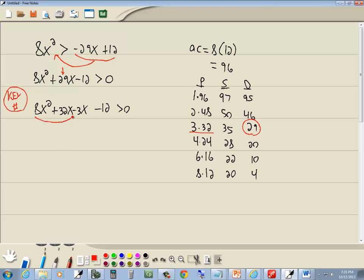Now we want to factor by grouping. Group first two terms together, group last two together. First two have an 8x in common, and that gives us x plus 4. Second group has both divisible by 3, and the first term is negative. So I factor out a negative 3, and that gives me x plus 4. Our goal was to get these parentheses the same, which they are. So I factor out an x plus 4, and that leaves us 8x minus 3 is greater than 0.